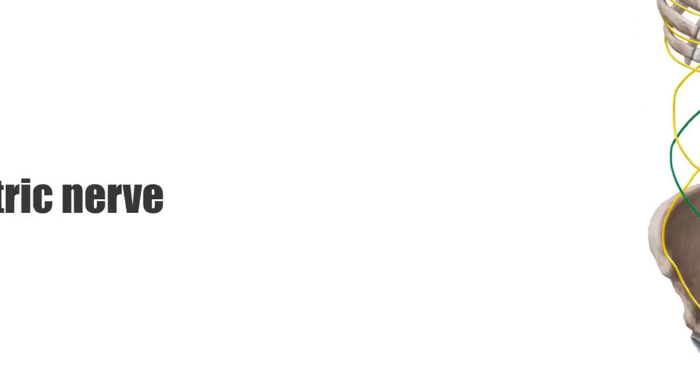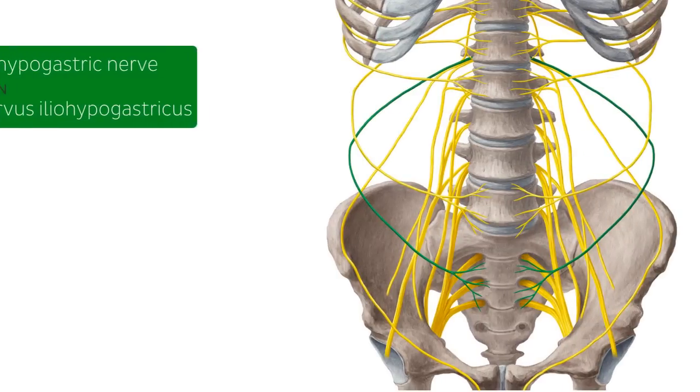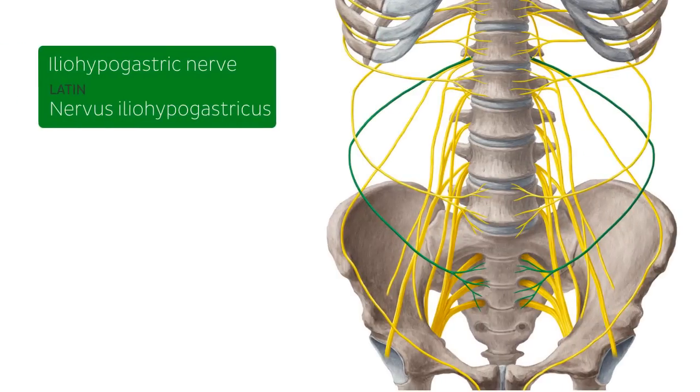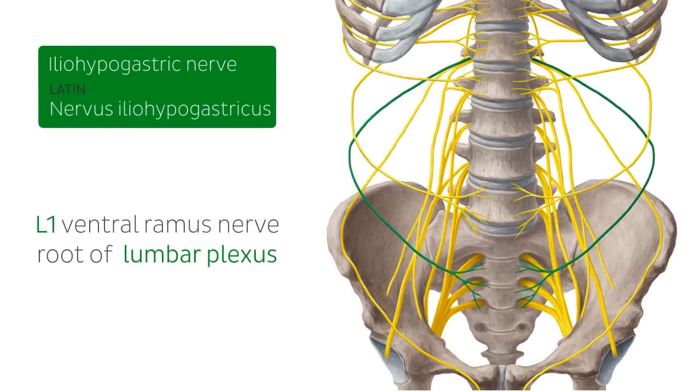Hello everyone, this is Nicole from Kenhub and in this tutorial we're going to be looking at the iliohypogastric nerve. The iliohypogastric nerve, which we can see here in green, arises from the ventral or anterior ramus of the first lumbar nerve root, L1, of the lumbar plexus.